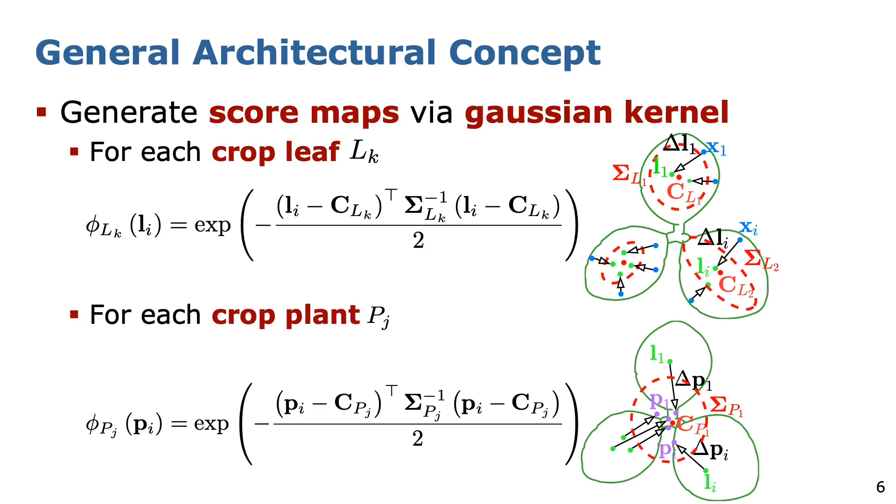Next, we convert the distance between spatial embeddings and their associated center into a score between 0 and 1 by applying an unnormalized Gaussian kernel centered at each object centroid. A high score indicates that the embedding Li or Pi is associated with the kth crop leaf or jth plant instance.